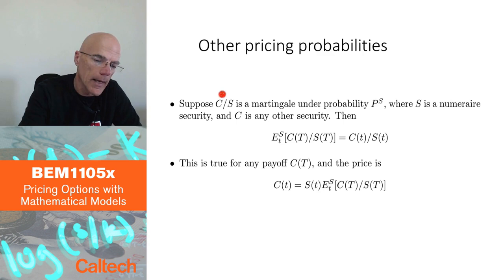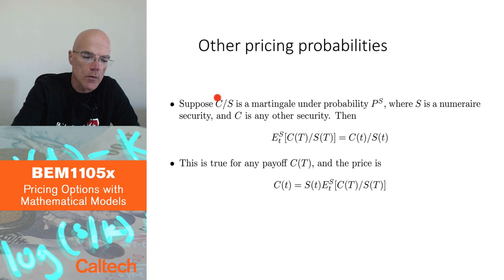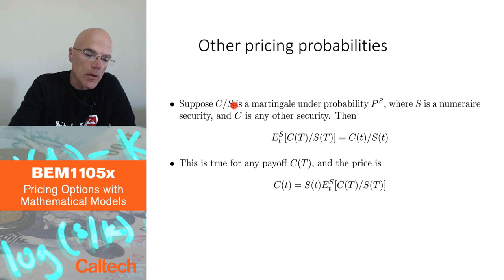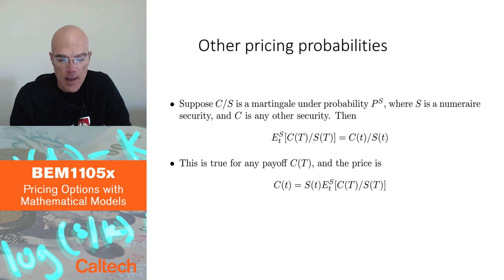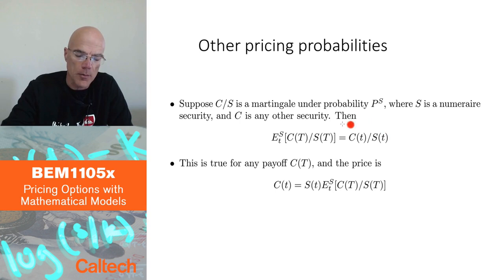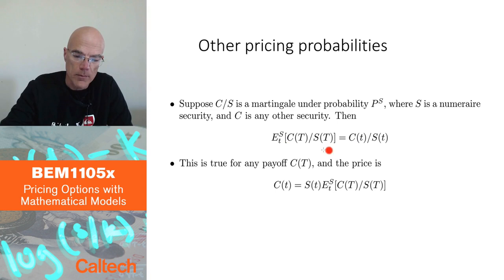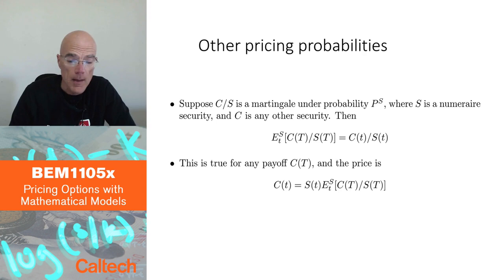What we require is that for any security C — whether it's a stock, bond, claim, derivative, or option — we want to find a probability P^S such that C discounted by our chosen numeraire S is a martingale under that probability. S is a fixed asset; it used to be the bank account but now it may be something else. The martingale property says the conditional expectation under P^S of the future value equals today's value.